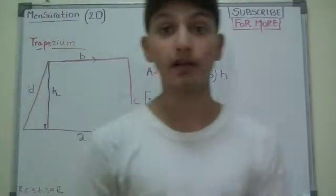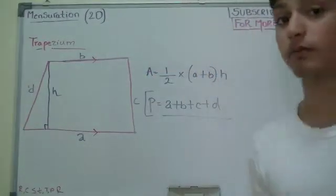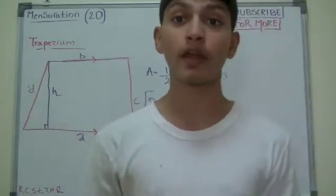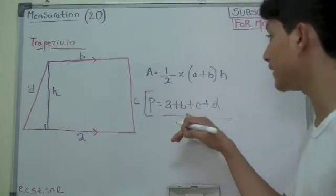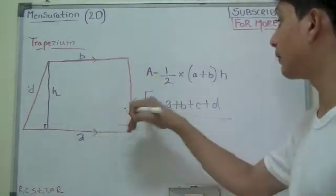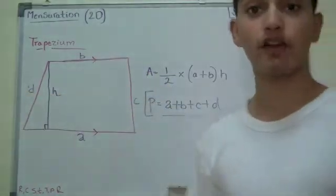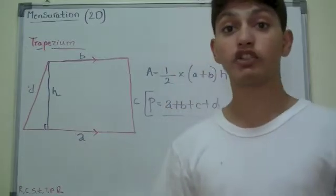Now for the perimeter, the notebook gives you a formula, but since there's a universal formula for perimeter, it's basically the sum of boundaries. So you would do A plus B plus C plus D, and there you have your perimeter of trapezium.